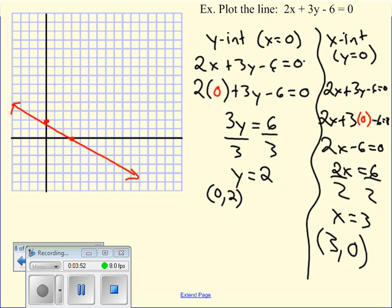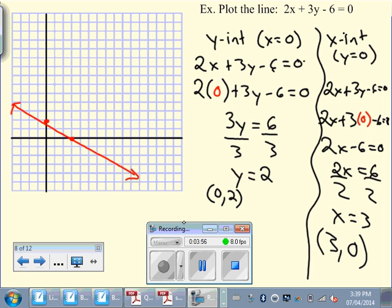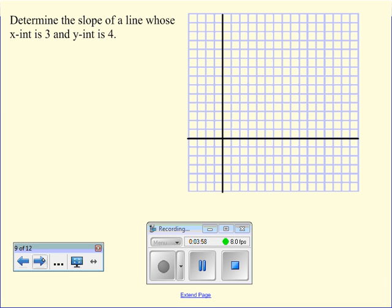Now something else you might be asked to do is to try and find the slope of a line whose x-intercept is 3 and y-intercept is 4. So I can do this a couple ways. I can plot out the two points. So x-intercept is 3, right here. Y-intercept is 4. And the line goes through. And I can figure out rise over run.